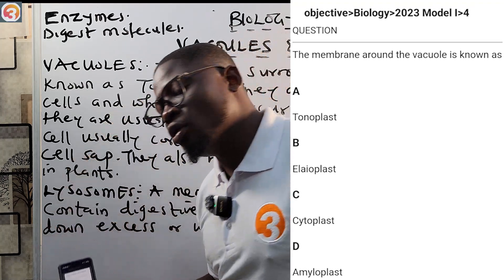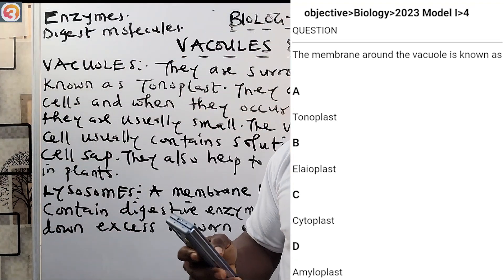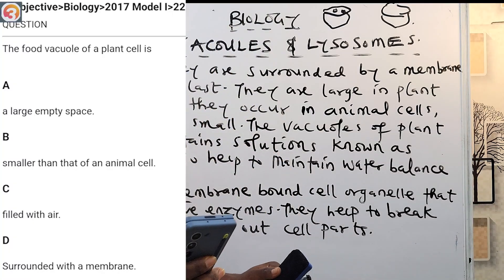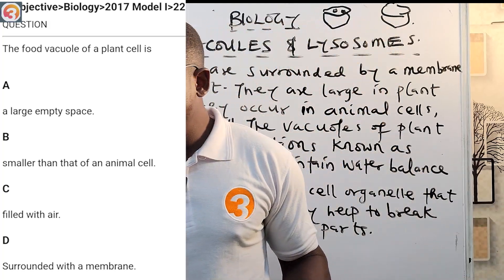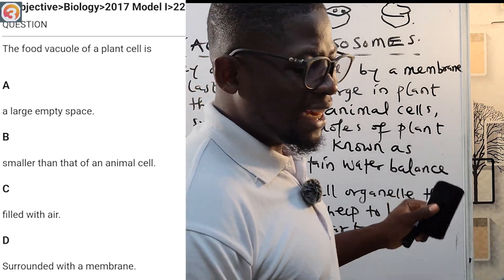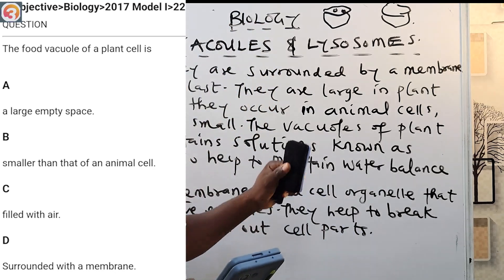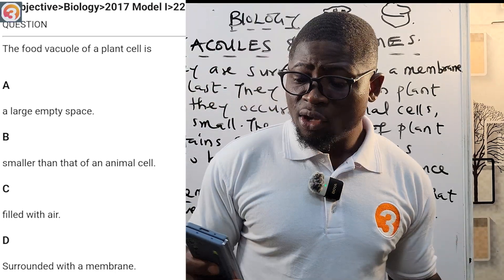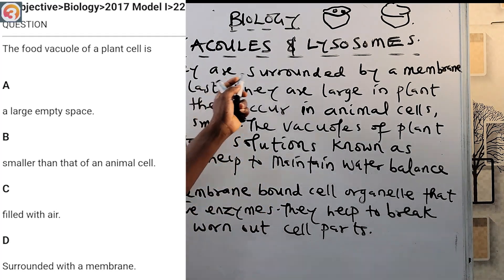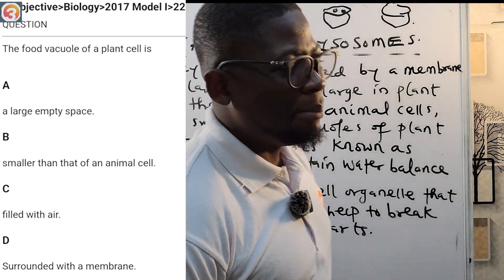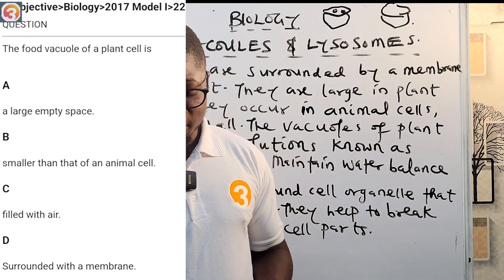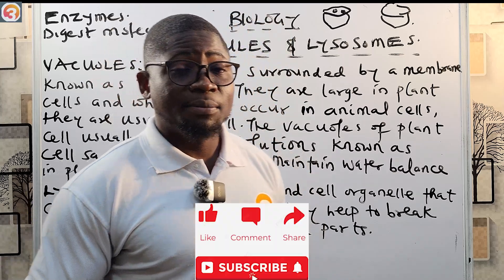Another question asks about a vacuole in a plant cell — the options are: A: a large empty space, B: smaller than that of an animal cell, C: filled with hair, D: surrounded by a membrane. We said the vacuole is a membrane-enclosed area, surrounded by a membrane known as the tonoplast, so the correct answer is option D.